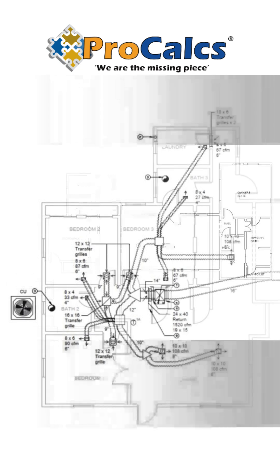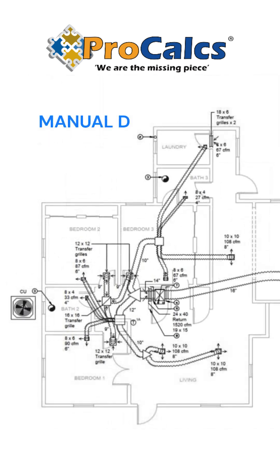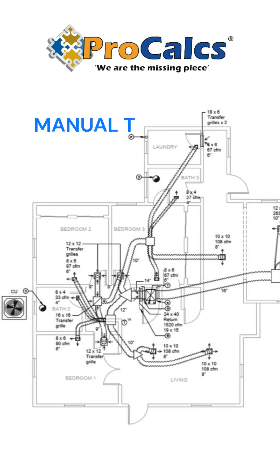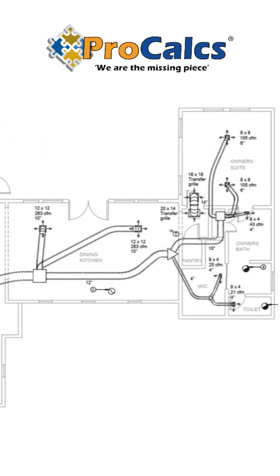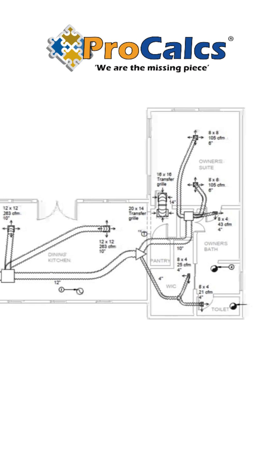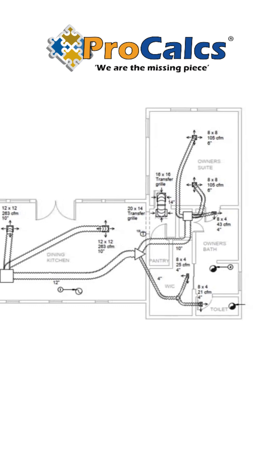We size the ductwork based on Manual D, and we place the supplies and returns based on Manual T. We determine the most efficient and practical routes for ductwork to ensure that the ducts can deliver the appropriate amount of conditioned air to meet the load demands of each zone.